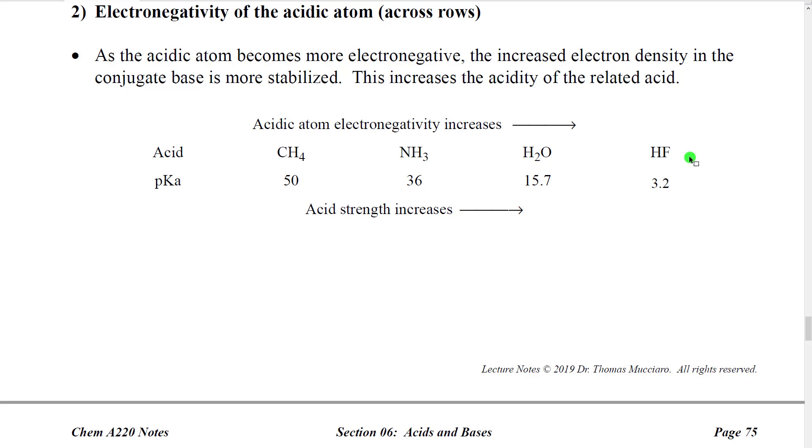having that increased electron density—sorry, the electron density stays roughly the same. But then, we put it on atoms that want electrons more, right? That's what electronegativity means. And so, the conjugate base becomes more stable as the electronegativity increases, when we're comparing an acidic atom across a row.